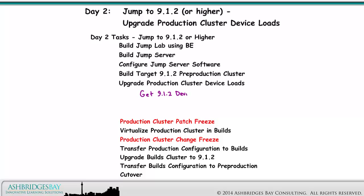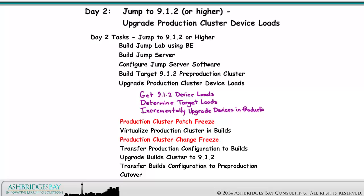The three main tasks are: get the 9.1.2 device loads, determine target loads, and incrementally upgrade devices in the production cluster.